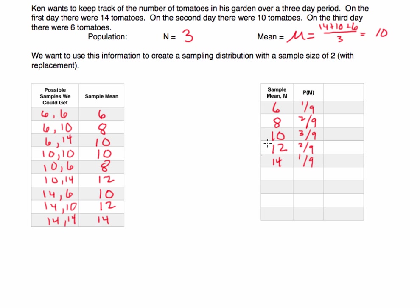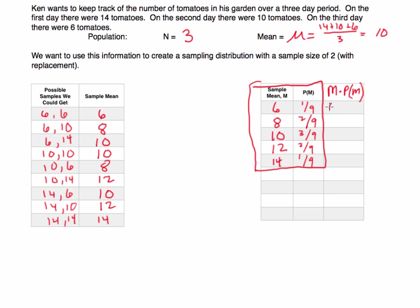This probability distribution — listed in red — is the sampling distribution for the sample mean for this problem. It lists all the possible sample means and the probability of getting each one. To find the mean of the sampling distribution, I multiply each value by its probability and sum: six times one-ninth, plus eight times two-ninths, plus ten times three-ninths.